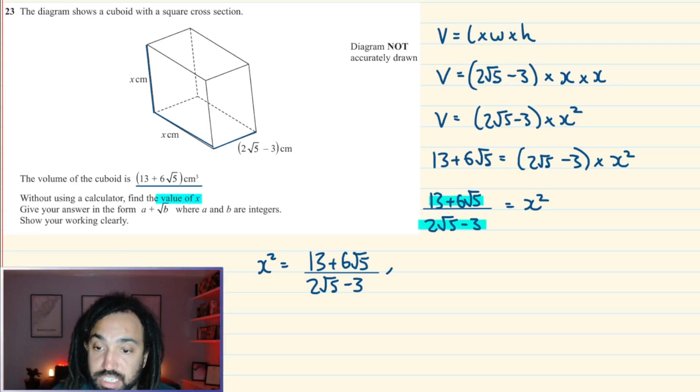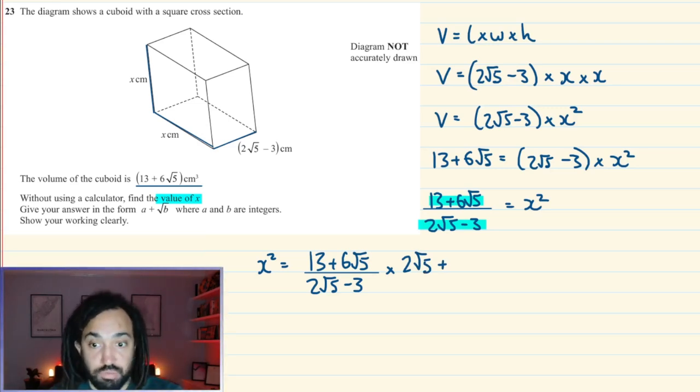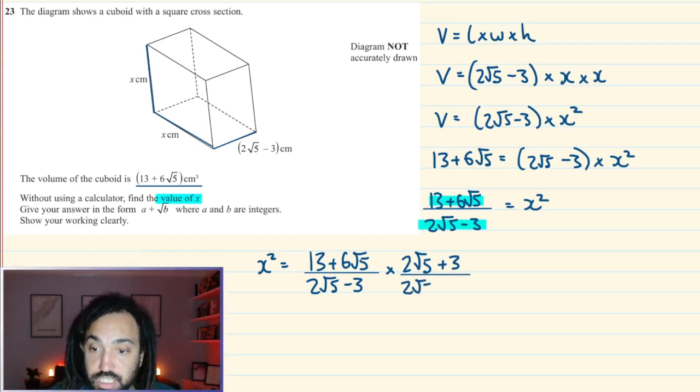So I can write that x² is equal to (13 + 6√5) all over (2√5 - 3). And then to rationalize the denominator, we multiply top and bottom by the denominator. But because we've got this one part surd, one part rational number, i.e. the minus 3, we have to multiply it by the surd and the rational number, but we swap the sign in the middle, top and bottom. That doesn't change the value because we're multiplying the top by the same thing and the bottom by the same thing.